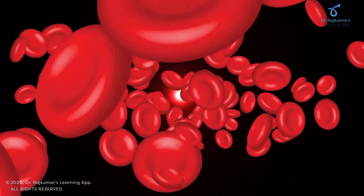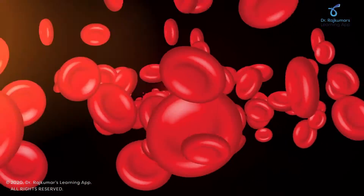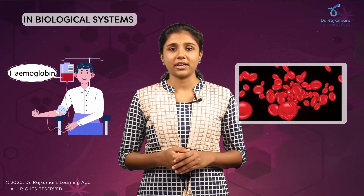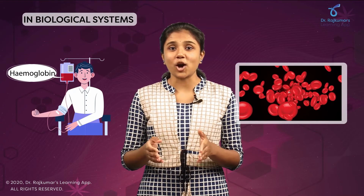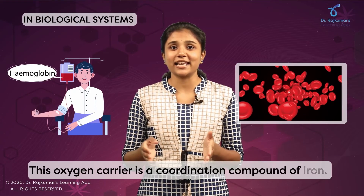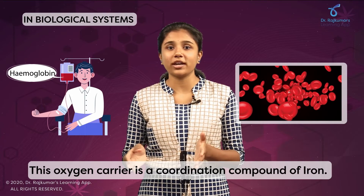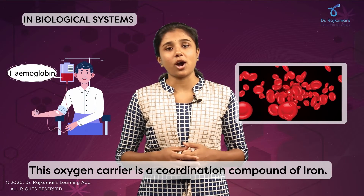When we talk about hemoglobin, the red pigment of blood — if hemoglobin is not present, there is no transportation of oxygen in the living system. So this oxygen carrier is nothing but a coordination compound of iron.